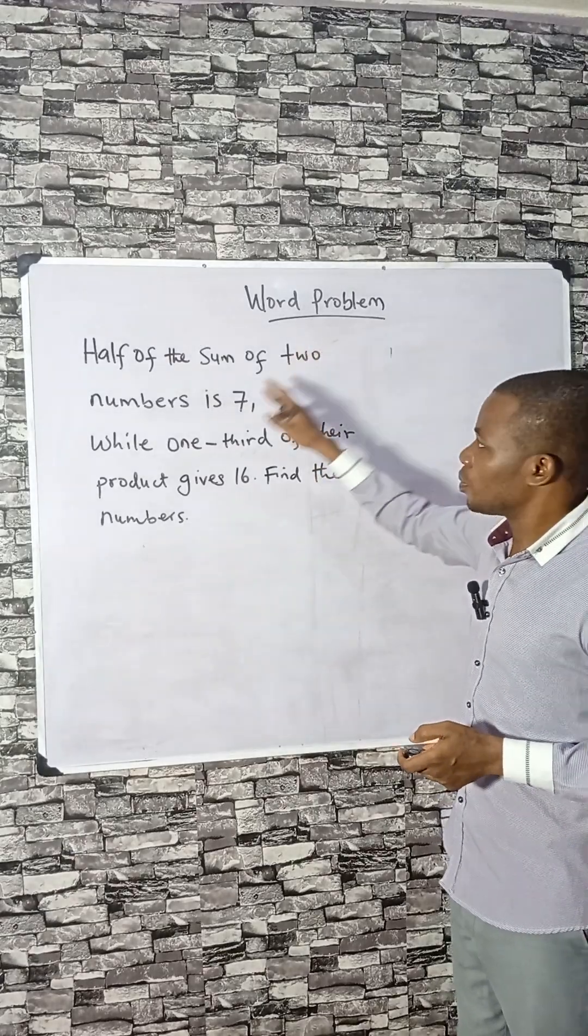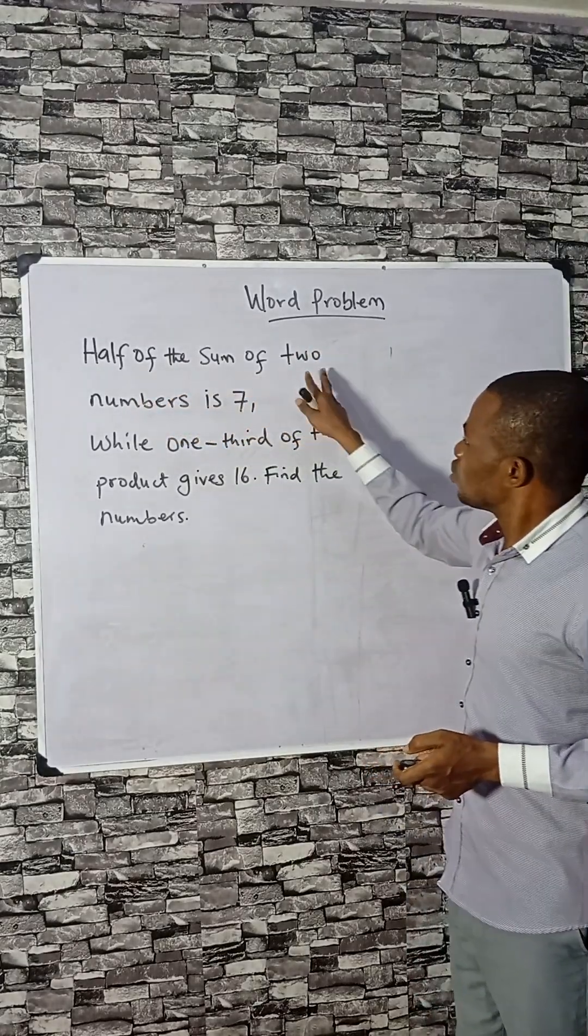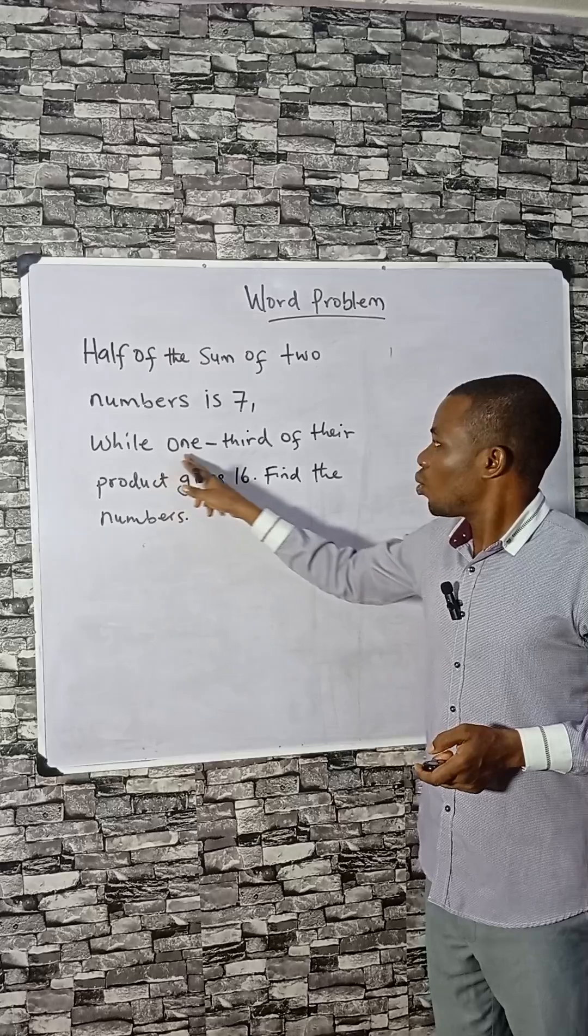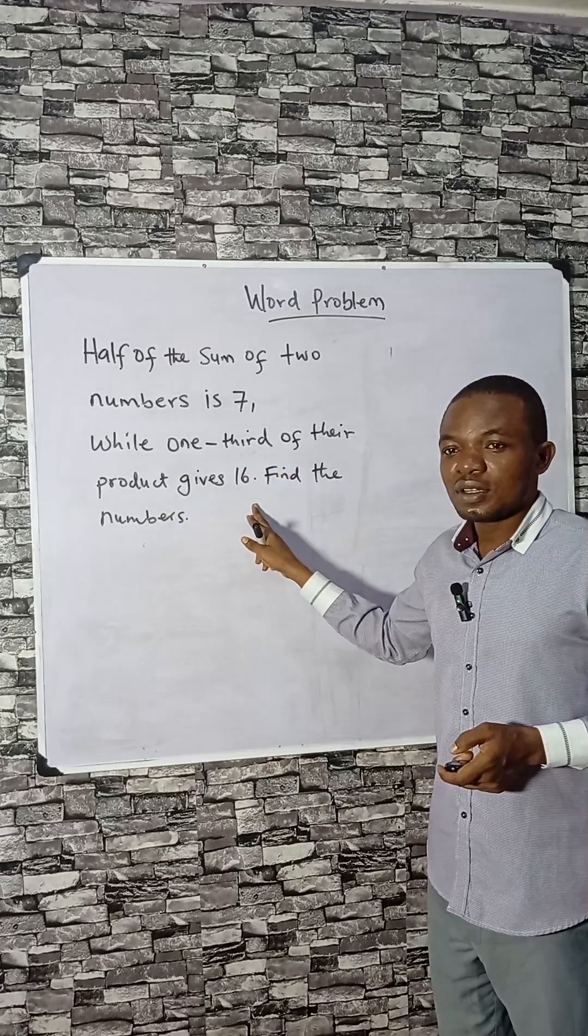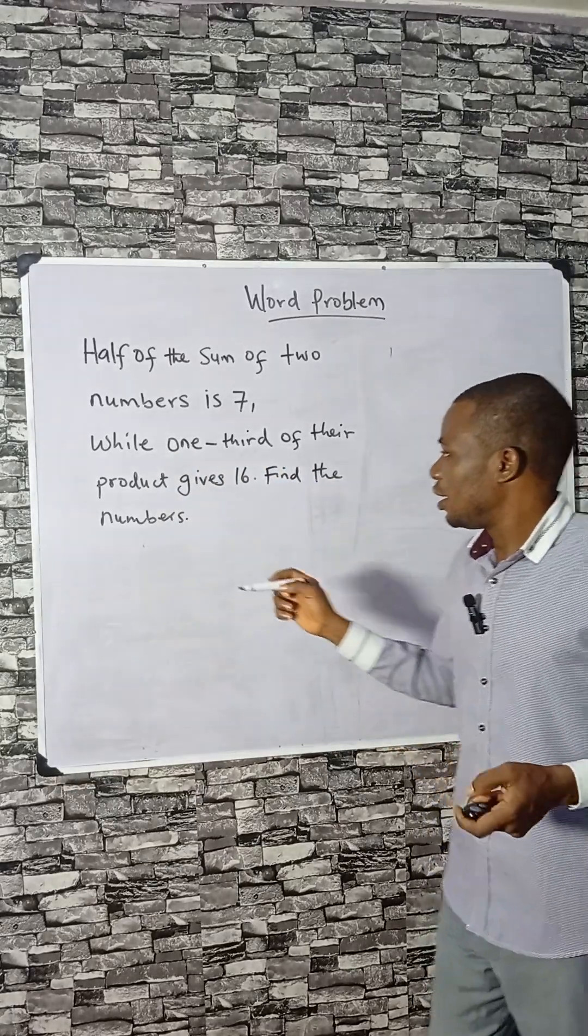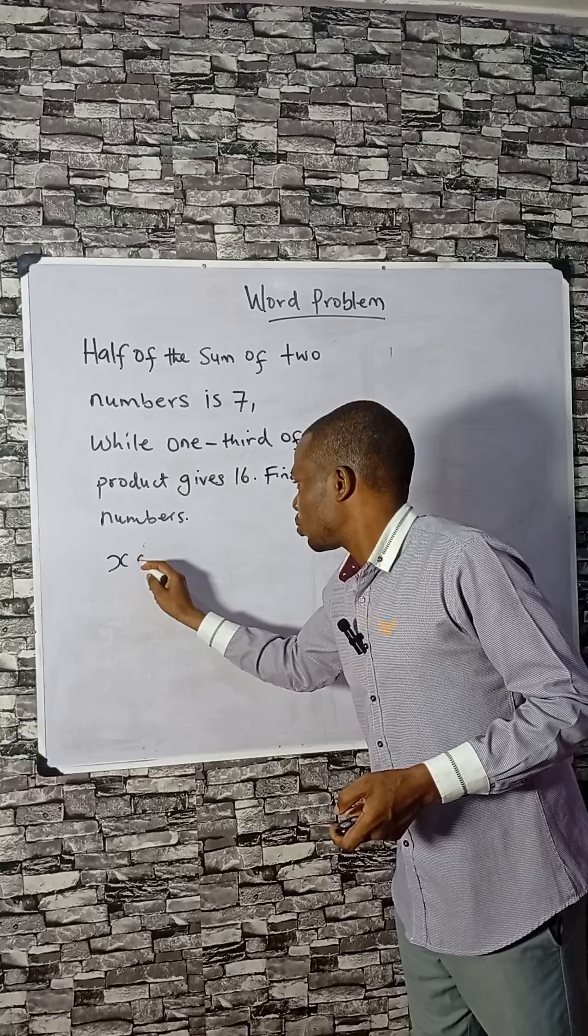We are considering a word problem today. Half of the sum of two numbers is 7, while one third of their product gives 16. Find the two numbers. Let the two numbers be x and y.